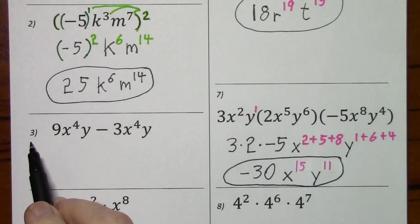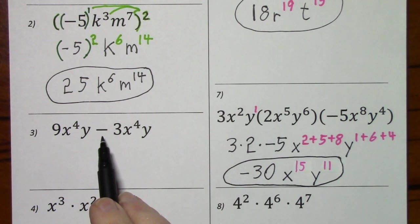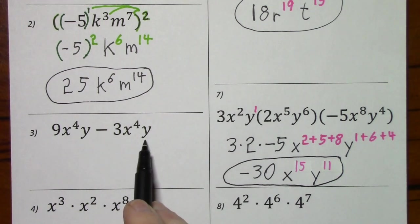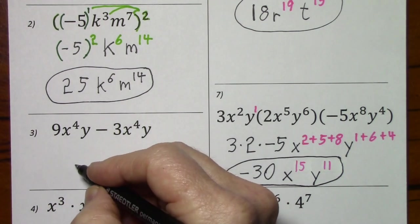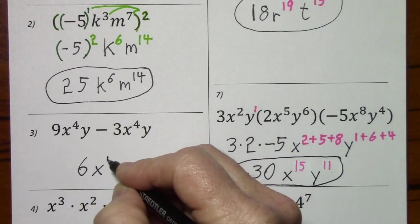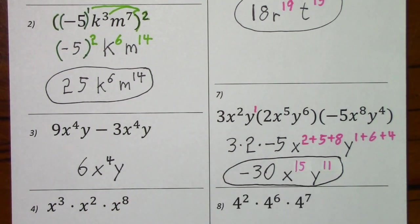Looking at number 3, we have addition or subtraction, so as long as we have like terms, we can add or subtract the coefficients. Basically, 9 minus 3 yields 6, and you keep the variables and exponents.